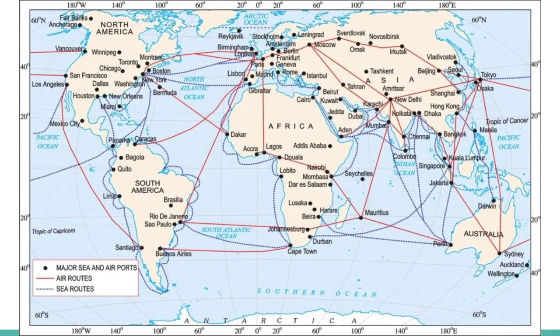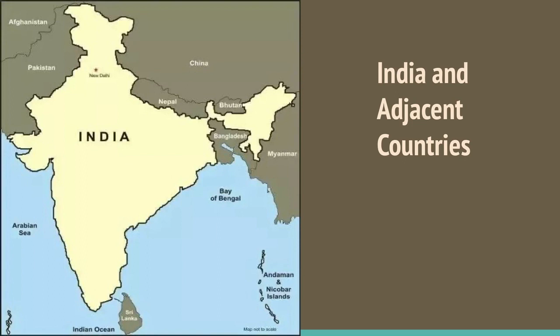India's contact with the world has continued through the ages, but India's relationships through land routes are much older than her maritime contacts. The various passes across the mountains in the north provided routes to ancient travelers, while the oceans restricted such interaction for a long time. These routes contributed to the exchange of ideas and commodities since ancient times — the ideas of the Upanishads, the Ramayana, the stories of Panchatantra, Indian numerals, and the decimal system reached many parts of the world.